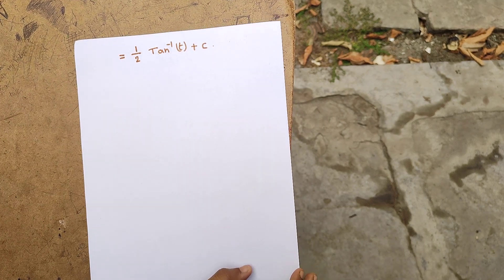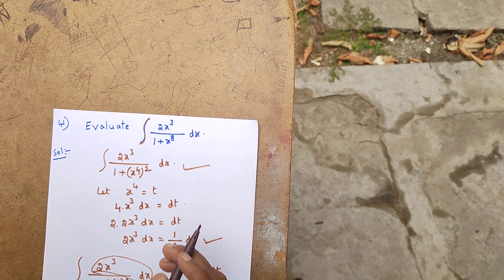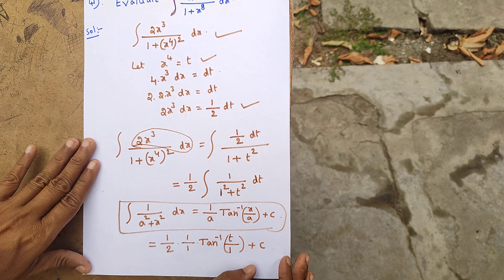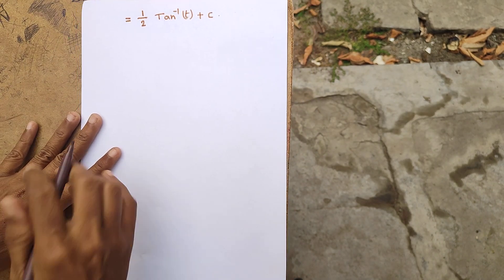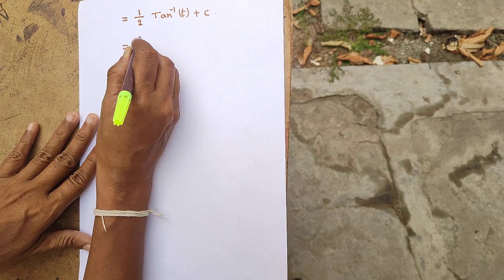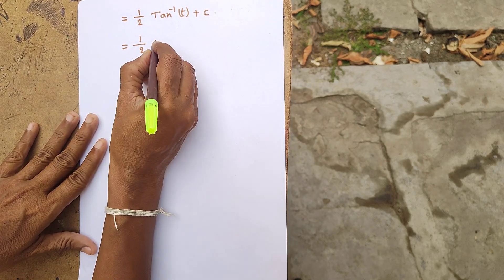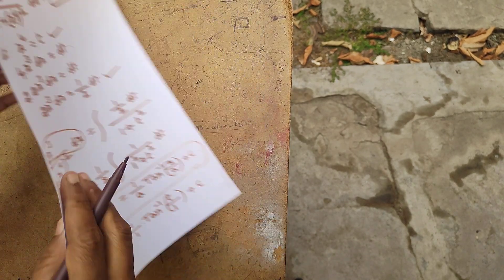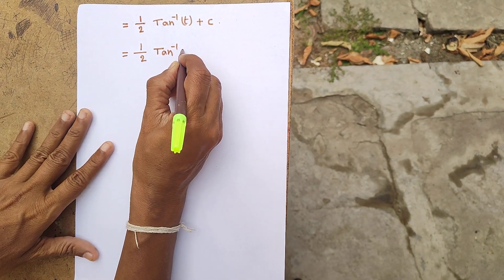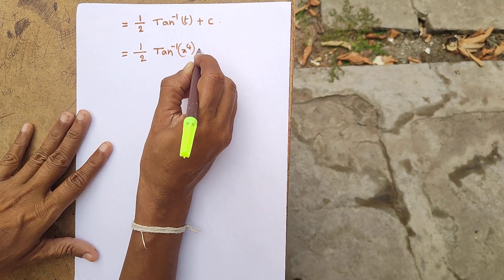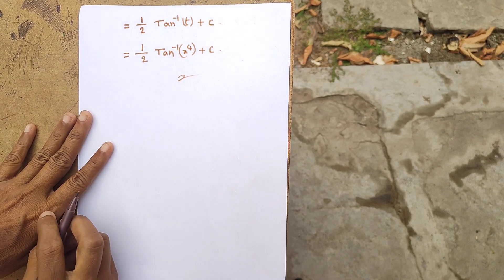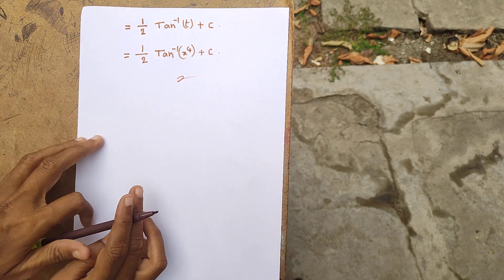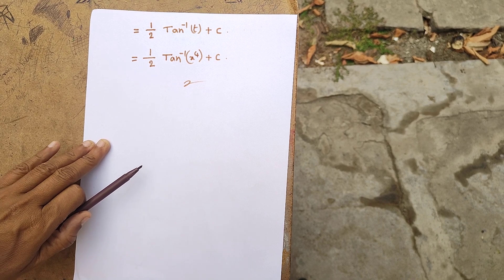Substituting back t equals x to the power 4, the final answer is one-half tan inverse of x to the power 4 plus c. This is the final answer. Thank you.